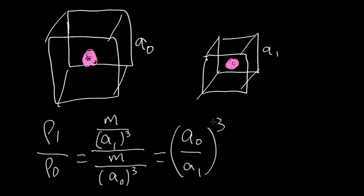In other words, the density of the universe evolves inversely with the cube of the scale factor.